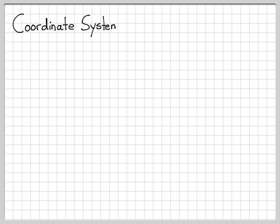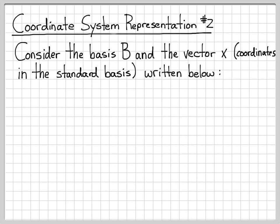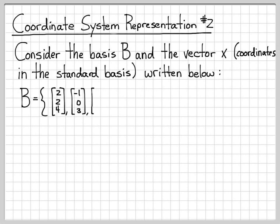Let's go ahead and work another problem dealing with coordinate system representation. This one will be a little bit different than the one we just worked in the playlist. In this problem, we have a basis b and we have a vector x. Since we're not using the brackets with the subscript b, we mean that this x is written with respect to the standard basis. The basis b is a set of three vectors, so we're working essentially in R3. The vector x, written with respect to the standard basis, is the vector 2, 3, 4.